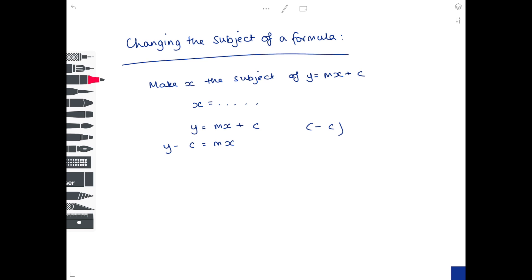we take away c from both sides. So you end up with y minus c equals mx. And then we need to make x by itself. And at the moment it's being multiplied by m. So how do you stop it being multiplied by m? Well, you divide by m on both sides. So y minus c, make sure the whole lot is divisible by m,